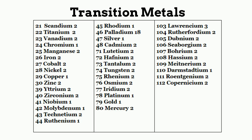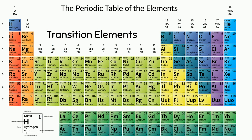However, things are not simple and straightforward with the transition metals. Technically, the elements zinc, cadmium, and mercury should not be considered transition metals because they have a full D10 configuration.